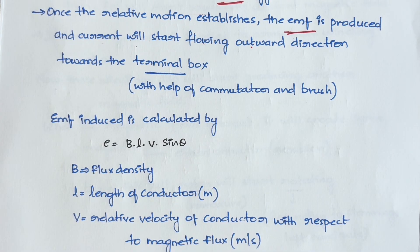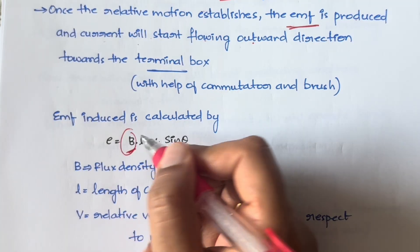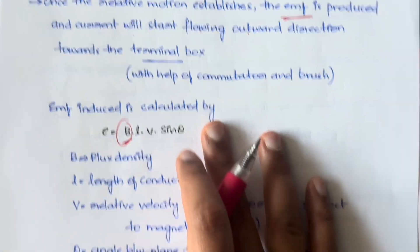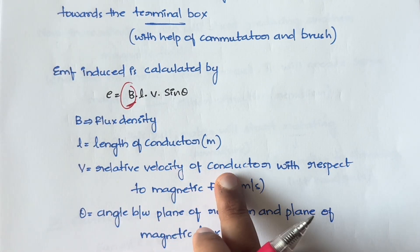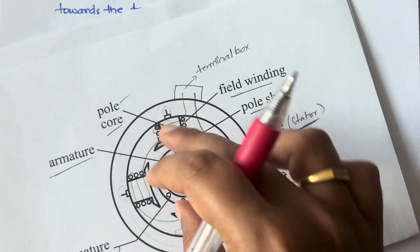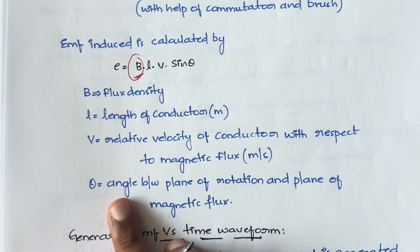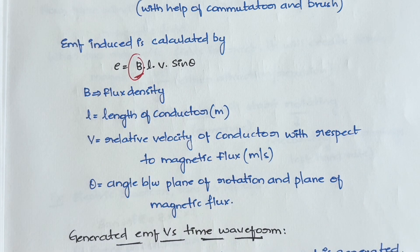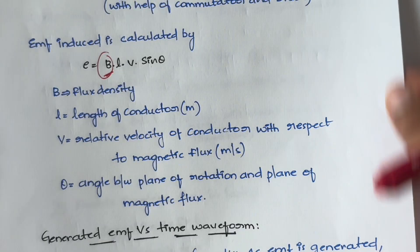Let's see the equation for EMF. The EMF induced is calculated as: E = BLV sin θ, where B is the magnetic flux density, L is the length of the conductor, V is the relative velocity of the conductor with respect to the magnetic flux, and θ is the angle between the plane of rotation and the plane of magnetic flux. Using this equation you calculate the amount of EMF induced.